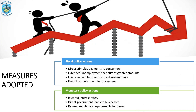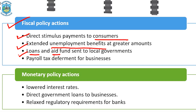The first set of measures relates to fiscal policy. These include: direct stimulus payments given by the government to consumers; extending unemployment benefits to greater amounts; loans and aid funds sent to local governments; and payroll tax deferments given for businesses.